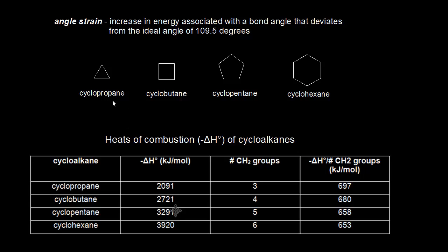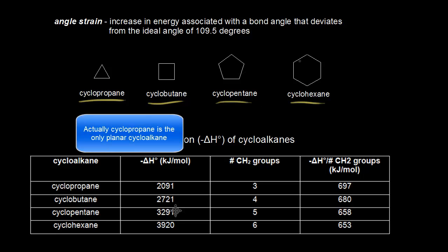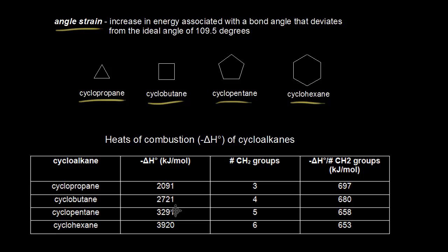At one time, it was thought that the cycloalkanes were all planar. So cyclopropane was thought to be a flat triangle, cyclobutane was thought to be a flat square, cyclopentane was thought to be a flat pentagon, and cyclohexane was thought to be a flat hexagon. In analyzing them, the idea of angle strain was introduced. Angle strain is the increase in energy associated with a bond angle that deviates from the ideal bond angle of 109.5 degrees — the bond angle for a carbon of tetrahedral geometry.